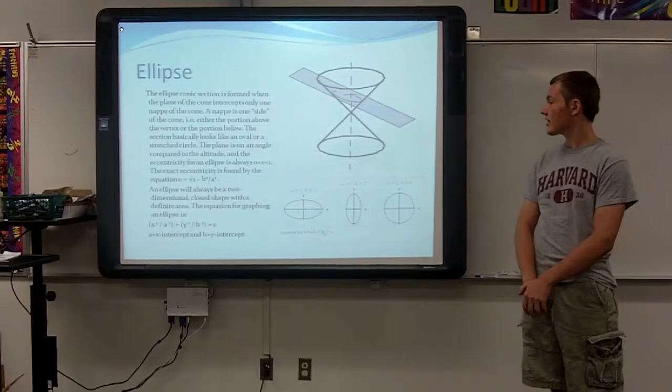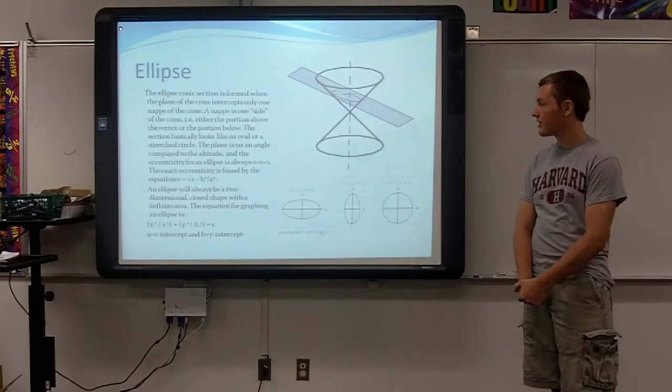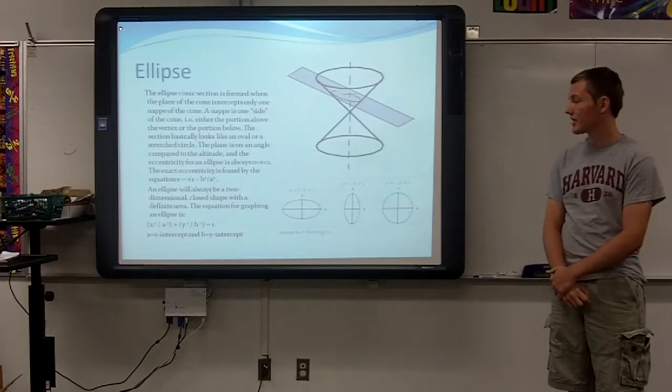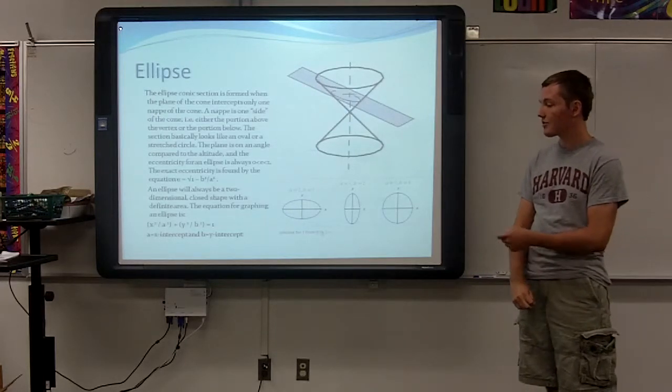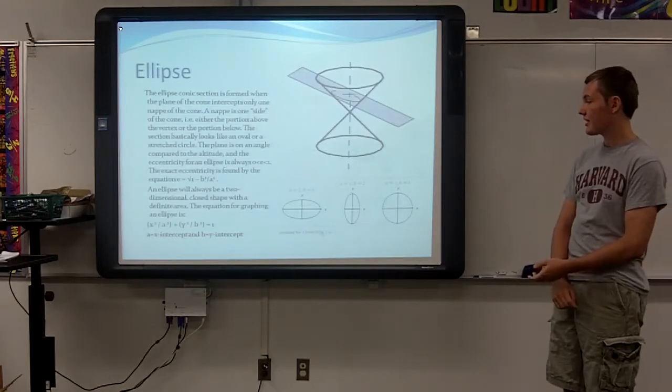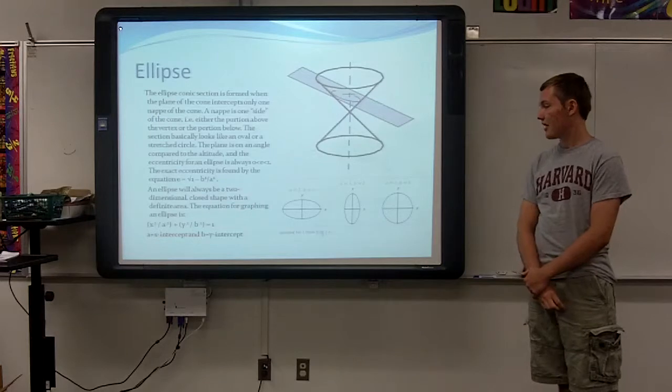An ellipse is always, always be a two-dimensional closed shape with a definite area. The equation for graphing an ellipse is x squared over a squared, plus y squared over b squared is equal to one. a is equal to the x-intercept, and b is equal to the y-intercept.